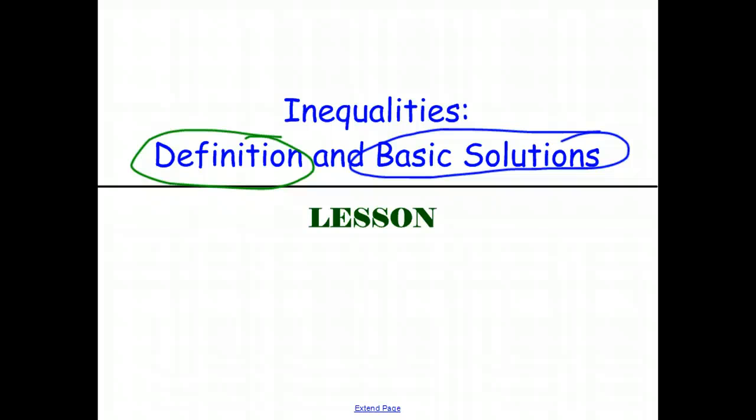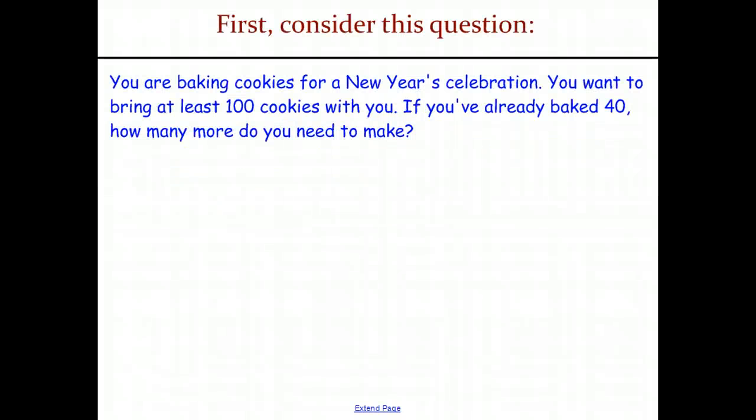So first, let's take a look at an example of something we might come across. For example, if you were baking cookies for a New Year's celebration, you wanted to bring at least 100 cookies with you. Now, of course, the inclusion of the words at least become important because that means you can have more than 100, or you could have 100 itself, but you can't have less than 100 cookies with you in order to satisfy what you decided you wanted to do, which was bring 100 cookies.